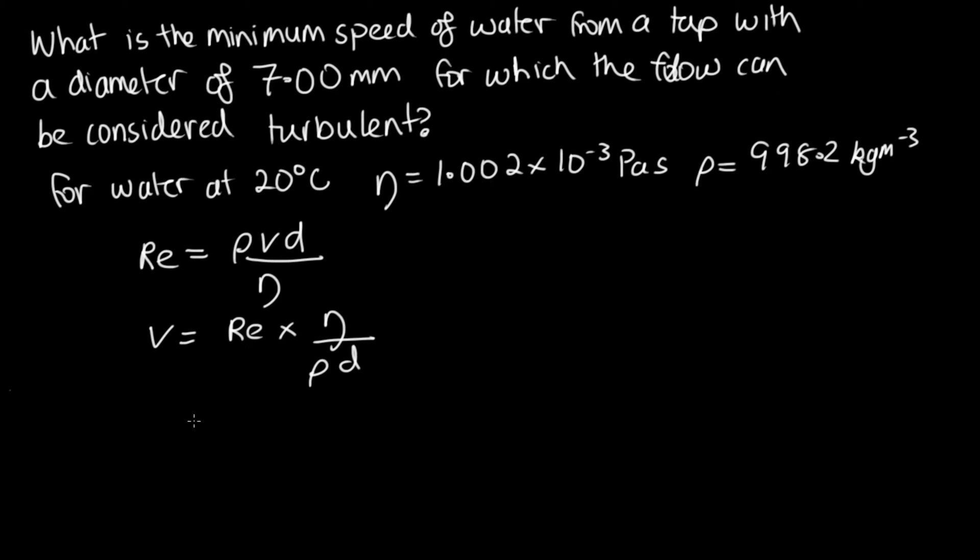Now we can substitute everything in. The minimum number that the Reynolds number can be is 4,000. We're trying to get the minimum velocity, so we'll need to use that minimum number. The viscosity is 1.002 × 10^-3. The density is 998.2. And the diameter is 7 millimeters, which we can put as 7.00 × 10^-3. That 10^-3 and that 10^-3 will cancel each other out. When we type all this into the calculator, we get 0.574 meters per second. So it's when the water hits this velocity that the flow will be completely turbulent when it's coming out of the tap.